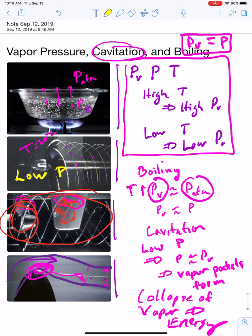And in this case of boiling, we have, instead of low p leading to this relationship, what we get is high values of temperature, which lead to high values of vapor pressure.